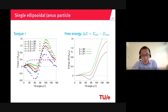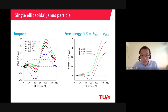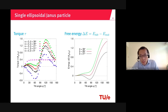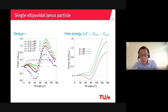I integrate this torque along the tilt angle to get the free energy difference between the tilted angle and the initial upright configuration. In the figure on the right, I show the free energy as a function of tilt angle. For a smaller beta angle — where the Janus property is weaker — there is a global energy minimum when the particle lies around 80°, so the tilted orientation is the global minimum. When we increase the beta angle, the upright orientation becomes the global energy minimum.